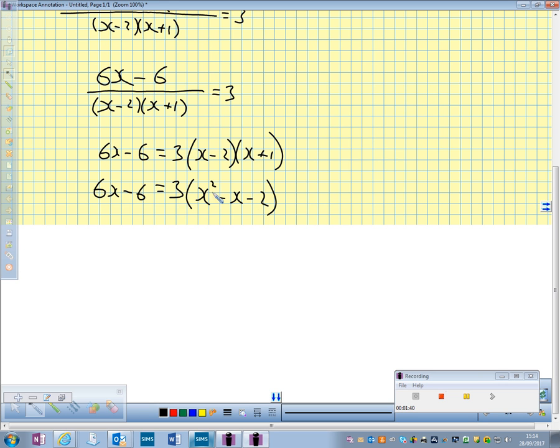Multiplying out now by our 3: 6x minus 6 equals 3x squared minus 3x minus 6.